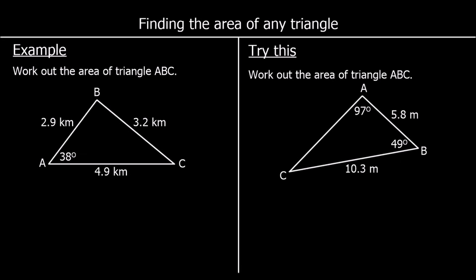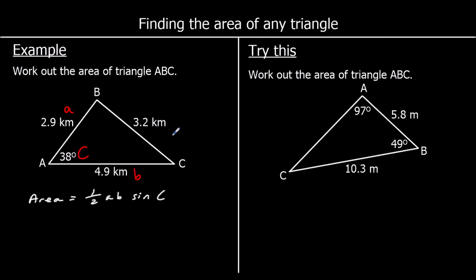Another example. The only thing done differently this time is added extra information. So again we're working out the area of a triangle and we're going to use the formula half AB sin C. We're looking for two lengths and the angle between them. So the angle 38 is going to be our big C, and the two lengths next to the angle are going to be A and B. The length 3.2 would be little c — it's not involved in the question, so we don't need that.